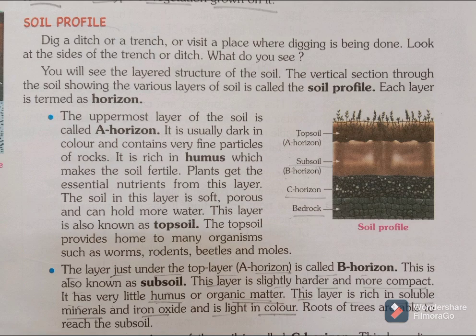The B horizon layer is present below the A horizon. This layer is slightly harder and more compact compared to the A layer. This layer is very low in humus. It is rich in soluble minerals and iron oxide and is light in color.